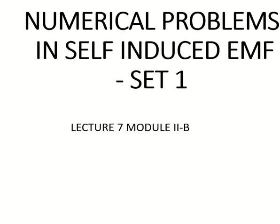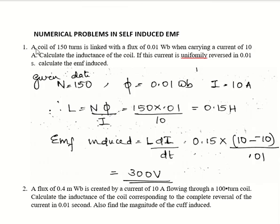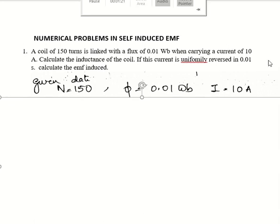First problem: a coil of 150 turns is linked with a flux of 0.01 Weber when carrying a current of 10 ampere. Calculate the inductance of the coil. If the current is uniformly reversed in 0.01 second, calculate the EMF induced. Given data: number of turns N = 150, flux φ = 0.01 Weber, current I = 10 ampere.